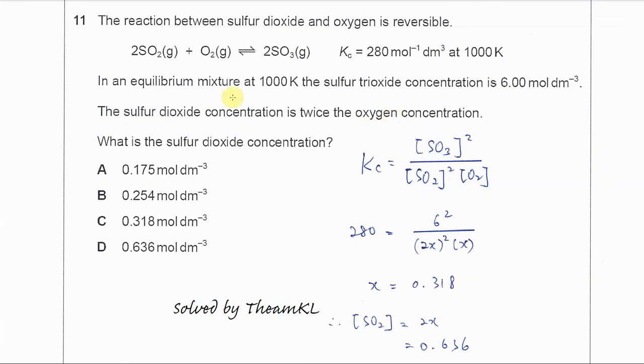This question is the oxidation of SO2 to form SO3. Kc is given. At equilibrium, sulfur trioxide concentration is 6 mol per dm³. The sulfur dioxide concentration is twice the oxygen concentration.